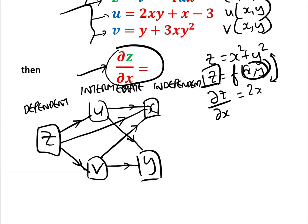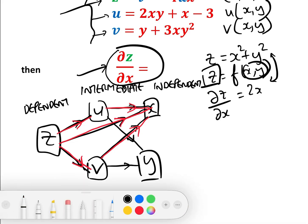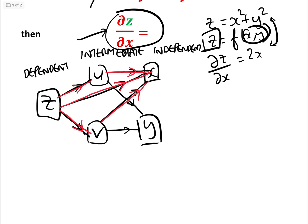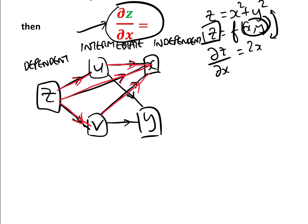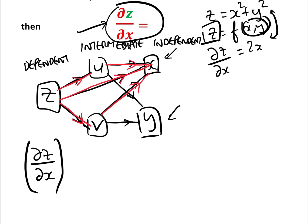So z goes directly to x, it also goes to x via u, and z also goes to x via v. We're going to use the chain rule here for partial differentiation. What we mean by dz/dx is: keep one independent variable fixed — i.e., y — there are two independent variables x and y, so it means keep y fixed and see what happens to z as x moves. Now let's look at our three paths.